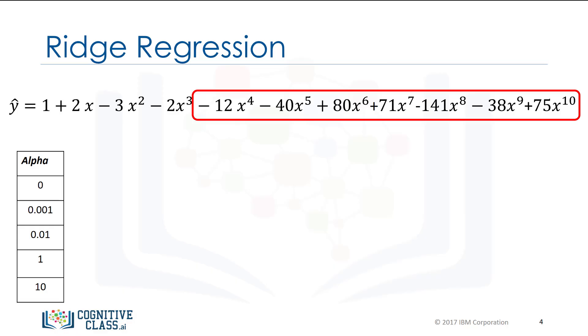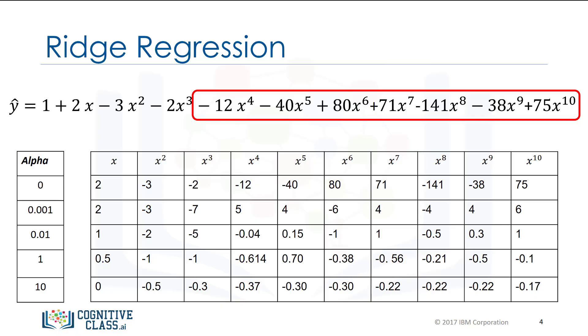Alpha is a parameter we select before fitting or training the model. Each row in the following table represents an increasing value of alpha. Let's see how different values of alpha change the model. This table represents the polynomial coefficients for different values of alpha.